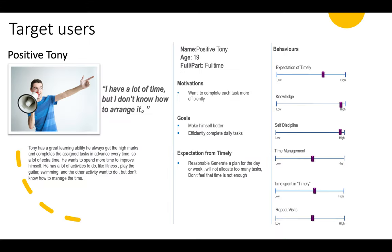My name is Shanling Ching, you can call me Jack. We have positive Tony. Tony has great learning ability and he always gets high marks and completes set tasks every time. He wants to spend more time to improve himself. He has a lot of activities to do — fitness, play guitar, and swimming — but doesn't know how to manage his time.